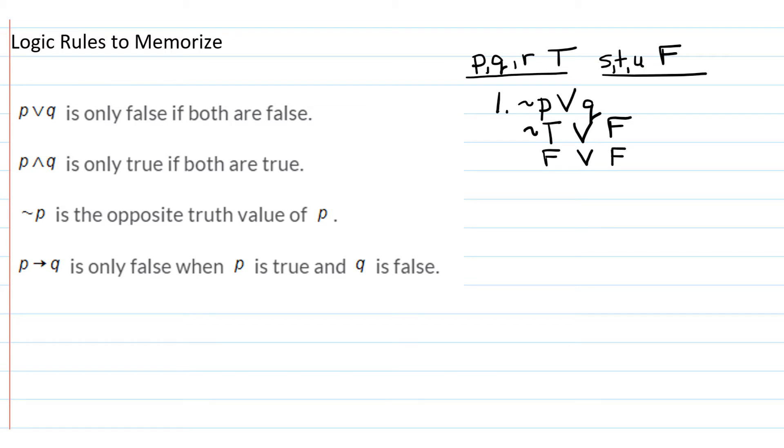So we have false or false. The way that I got from this step to this step was to apply the rule negation of P is the opposite truth value of P. So negation of a true is a false.